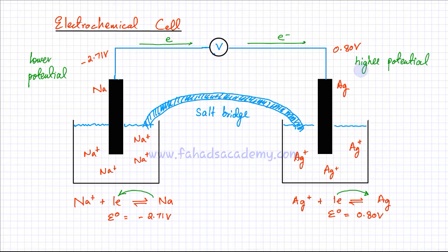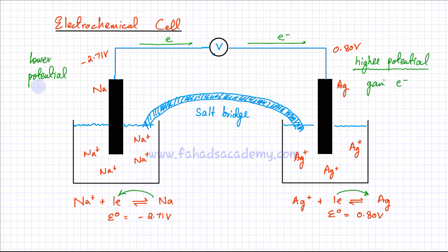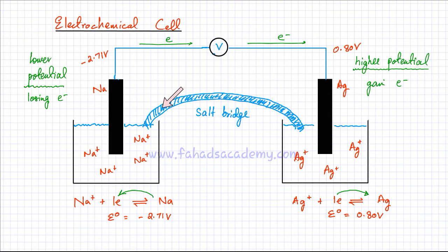Whenever you connect two electrodes together, the higher potential will have a tendency to gain electrons, so it's going to start gaining electrons. The lower potential, which has a tendency to lose electrons, would start losing electrons. Remember: the higher potential always gains electrons; the lower potential always loses electrons. And this results in the generation of electricity. This is what your electrochemical cell does — you have two electrodes, you connect them together, and this results in the production of a current where electrons move from the lower potential to the higher potential. If you look at these two equations, I'm going to rewrite them because now they're no longer reversible reactions — the equilibrium has been disturbed.